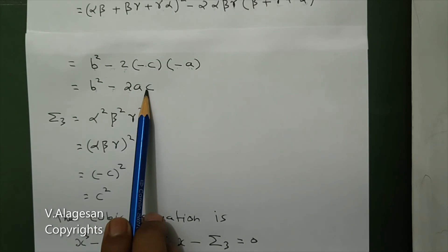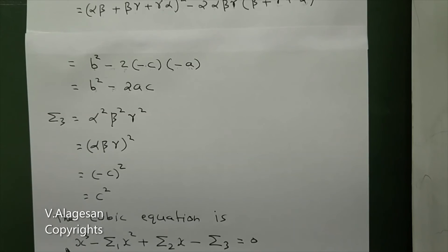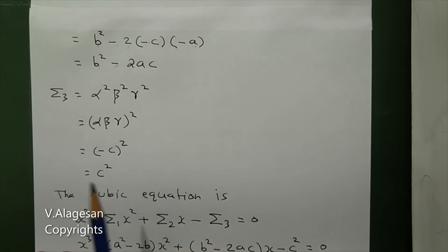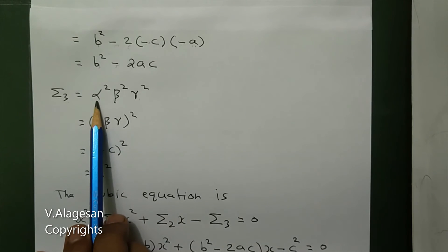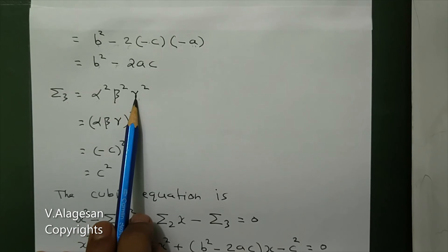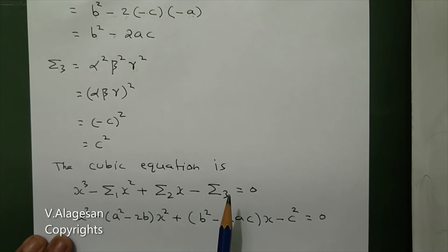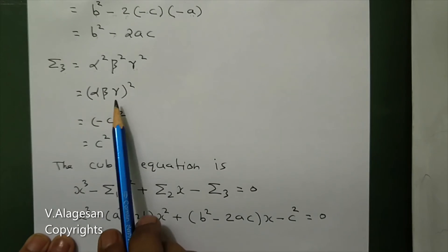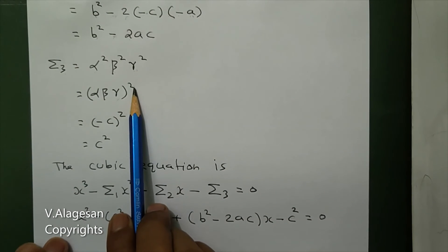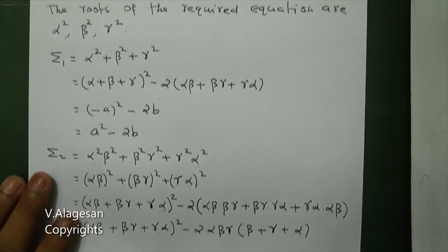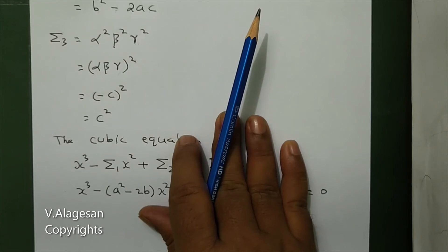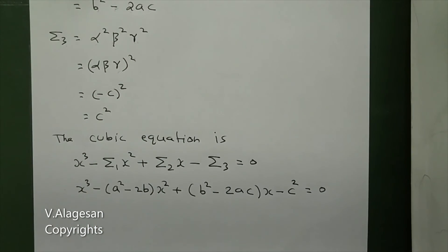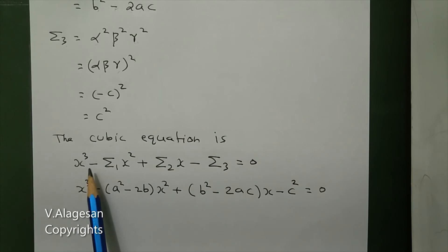Σ2 = b² - 2ac. Next, Σ3 is the product of three roots: alpha²·beta²·gamma² = (alpha·beta·gamma)² = (-c)² = c².